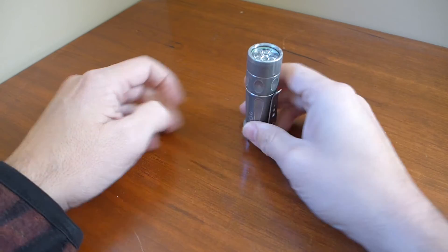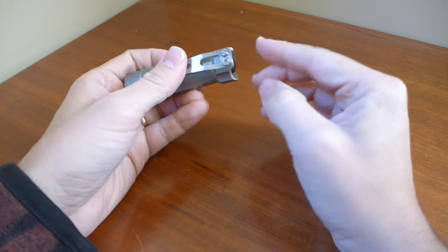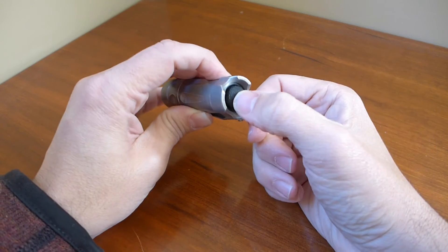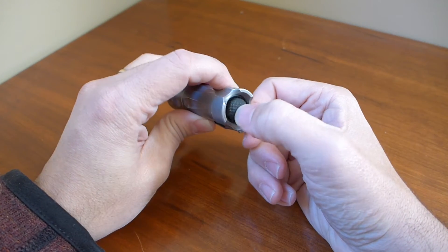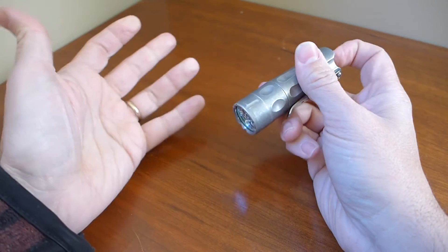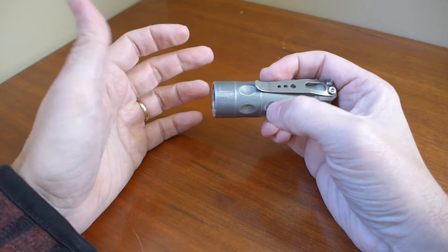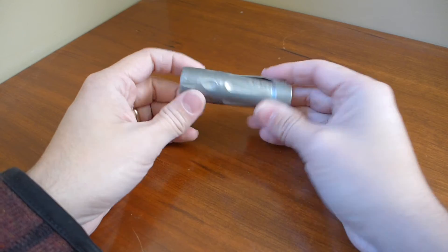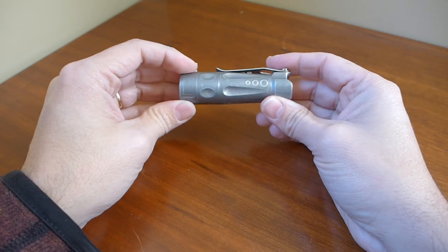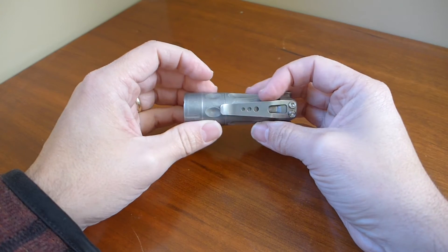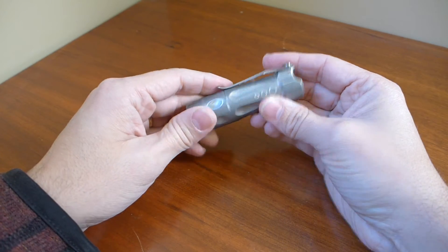And it tail stands rock solid. The clip is out of the way. The clicky is out of the way. It runs a McClicky tail switch with a really nice boot on it. Everything about this light is super awesome. I'm really stoked to have the light. I was able to get in. I bought it like two minutes after Oveready posted it in their email. And I'm really pleased to have it.